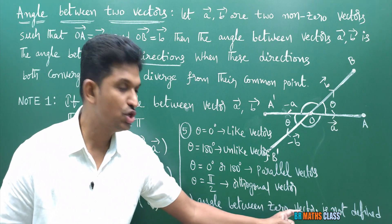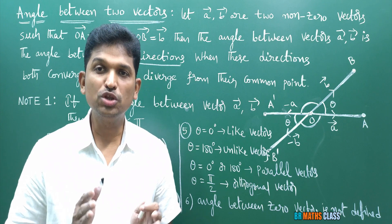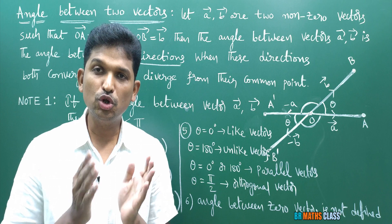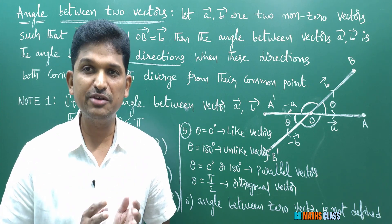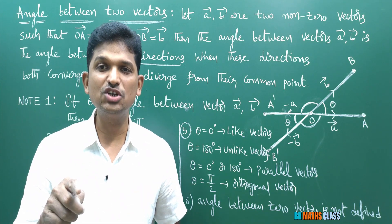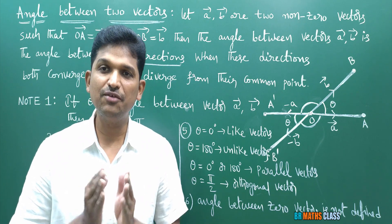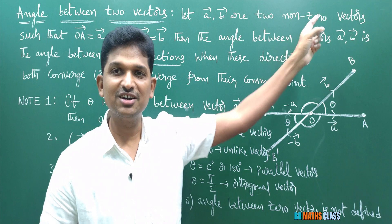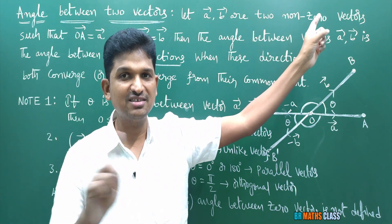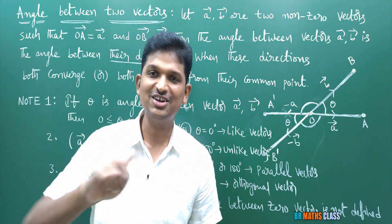The angle between zero vectors is not defined. Whatever vectors are given, if both are non-zero vectors, then we can find the angle between them. If both vectors are zero vectors, the angle is not defined. If one of the vectors is a zero vector, then also the angle between the vectors is not defined. That is why in the definition they mentioned that a-bar and b-bar are two non-zero vectors.